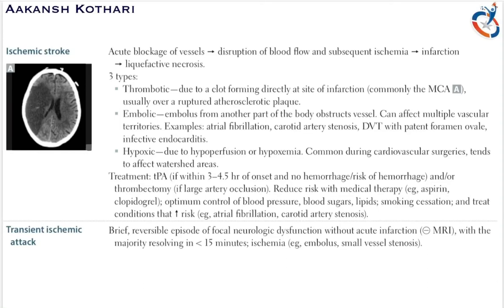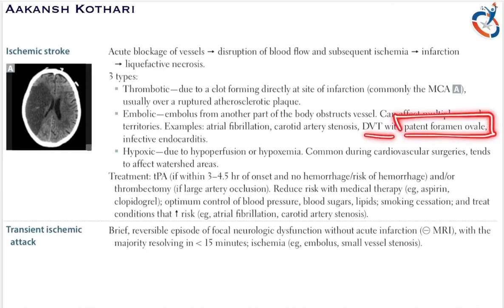In embolic stroke, an embolus forms from another part of the body and obstructs a vessel supplying the brain. It can affect multiple vascular territories. Examples of sources include atrial fibrillation, carotid artery stenosis, deep vein thrombosis with patent foramen ovale, and infective endocarditis.